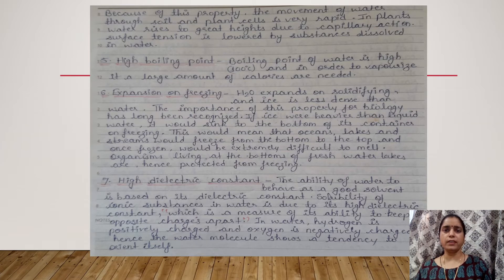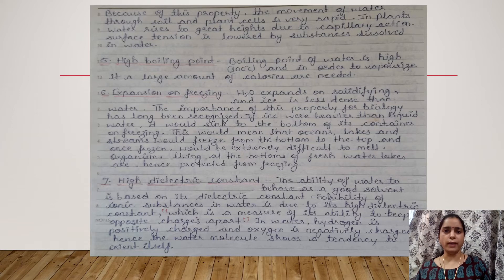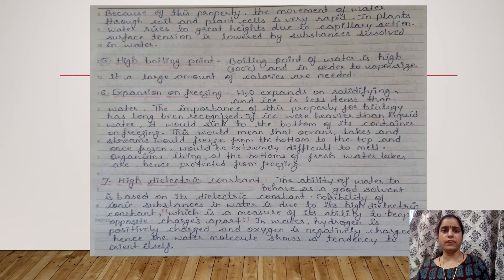The next property is surface tension. The surface tension of water is also very high, and this property is very useful for plants. The movement of water through soil and plant cells is very rapid, and in plants water rises to great heights due to capillary action. Surface tension is lowered by substances dissolved in water.